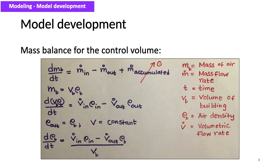The terms used in this equation are: m_B represents the mass of air inside the building; m_dot is the mass flow rate of air; t is time; V_B is the volume of the building; rho_B is the air density inside the building; and V_dot is the volumetric flow rate of air.